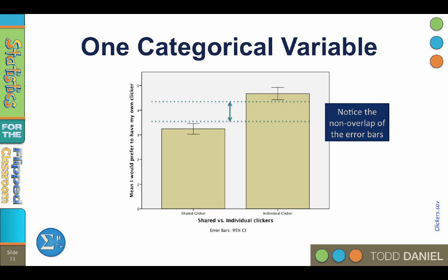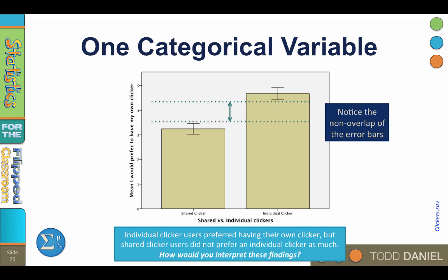So how would you interpret these findings? We assumed that everyone would prefer having a clicker all to themselves. Using the preference of the individual clicker group as a baseline, we were surprised to see that preference for an individual clicker was lower in the group that had the experience of sharing a clicker with the group.